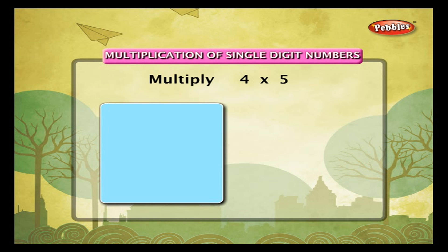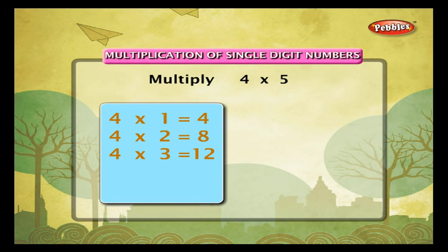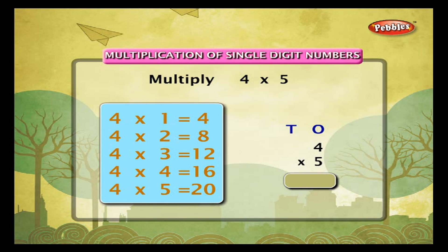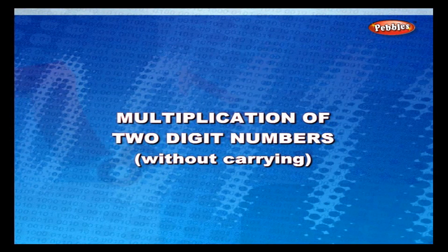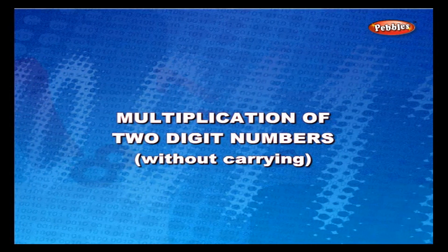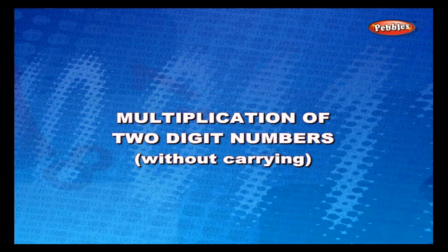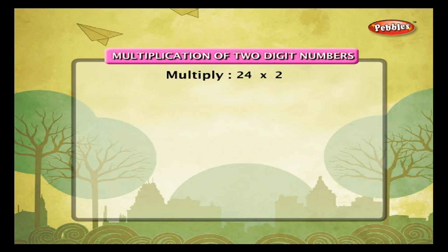Multiplication of single digit numbers. Example: multiply 4 by 5. Use the 4 times table. 4 into 1 is 4, 4 into 2 is 8, 4 into 3 is 12, 4 into 4 is 16, and 4 into 5 is 20. Therefore, 4 multiplied by 5 gives 20.